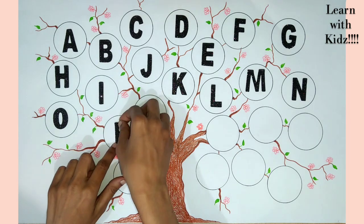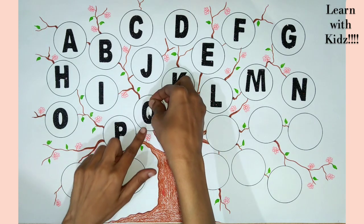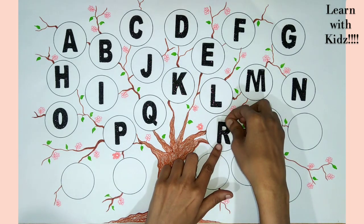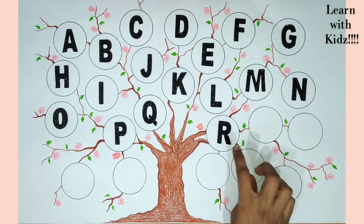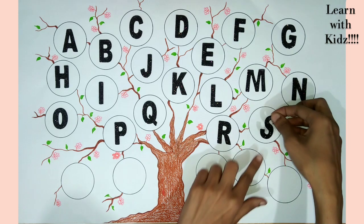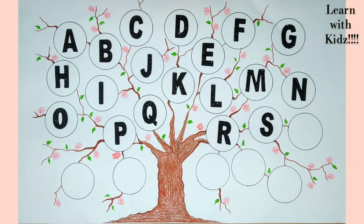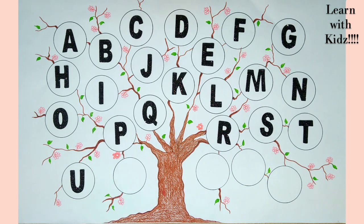P for parrot. Q for queen. R for rose. S for ship. T for tiger. U for umbrella.